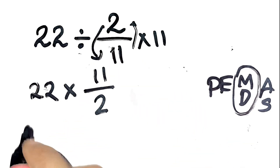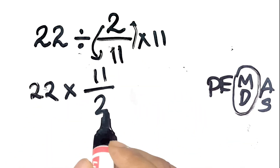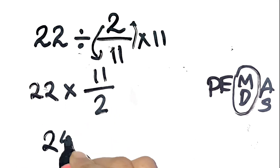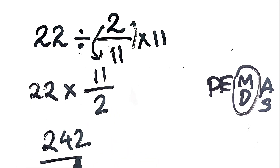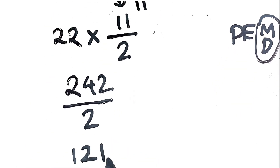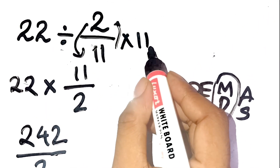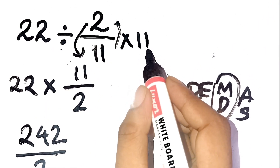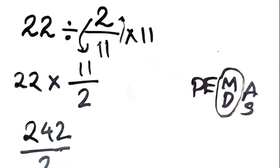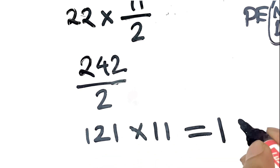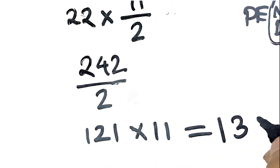Now that's 22 times 11 divided by 2. 22 times 11 is 242. Divide that by 2 and we get 121. Now don't forget, we still have one more multiplication left. We multiply that result by 11.